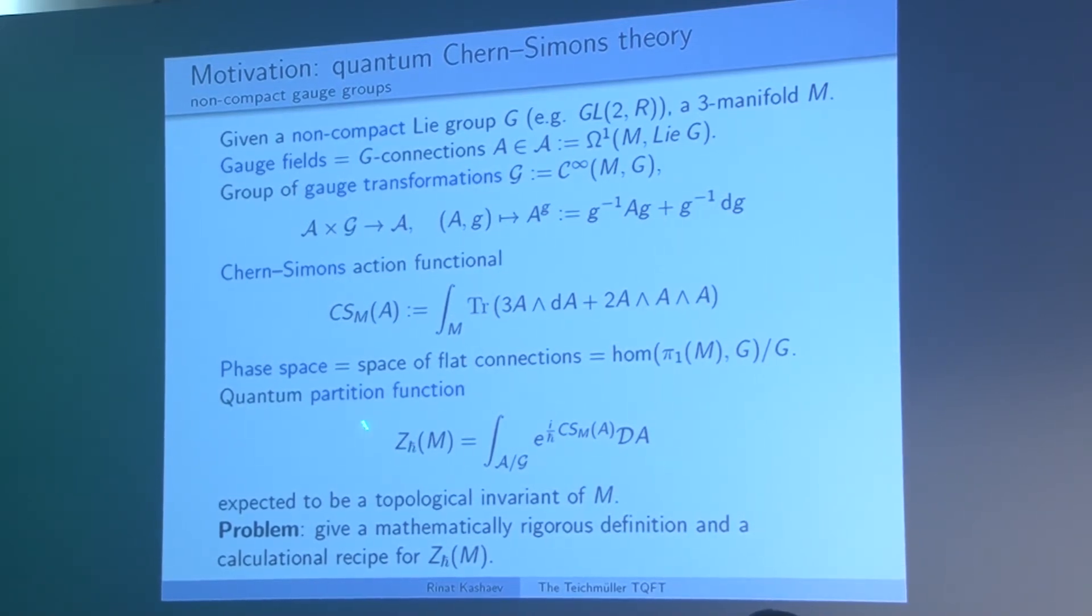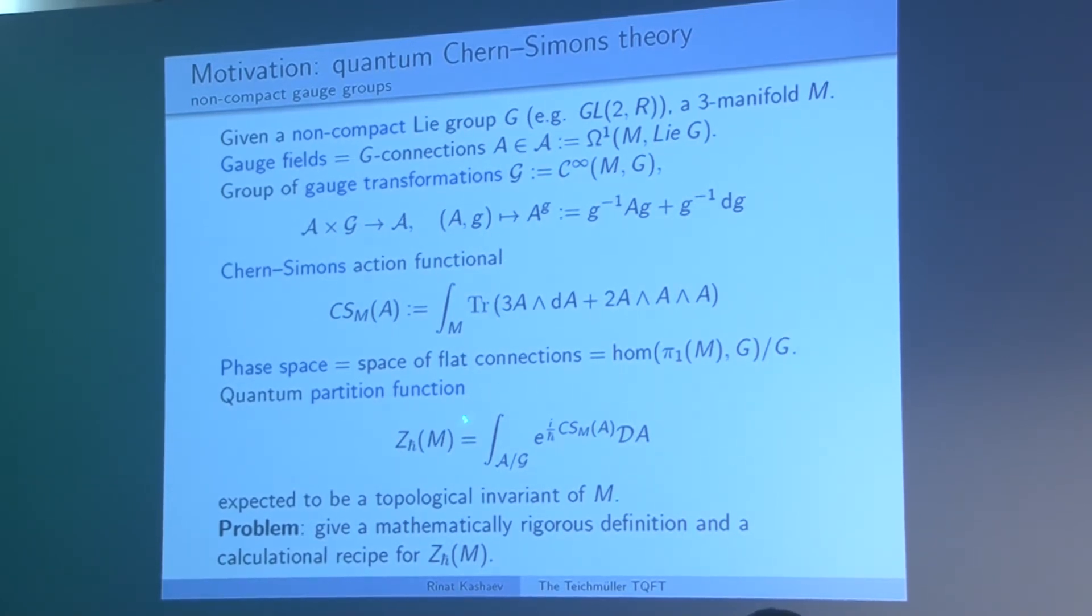The main object of interest in quantum theory is a partition function which has this formal definition, where dA is a so-called path integral, a very formal thing. As a result, the problem I will be concerned with is to give a mathematically rigorous definition and calculational recipe to get that number. Since the action functional does not depend on the metric on the manifold, the partition function is expected to be a topological invariant. Of course I will not give you the complete answer, but I will try to convince you that we have some part of the solution at least.